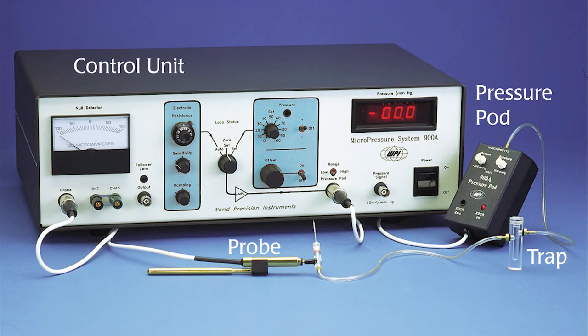The 900A is designed to measure hydrostatic pressure in small vessels and cells. Pressure ranges of minus 200 to plus 400 millimeters of mercury can be measured with stability and accuracy.